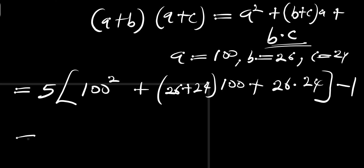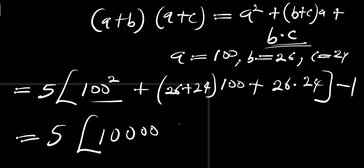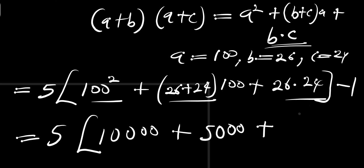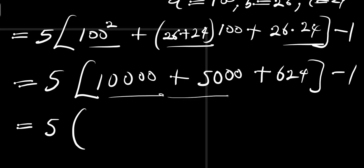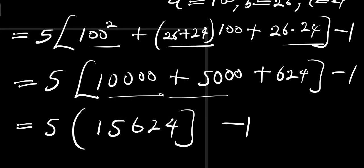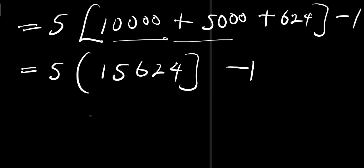Expanding: 100 squared is 10,000; 26 plus 24 is 50, and 50 times 100 is 5,000; 26 times 24 is 624; and we have minus 1. Adding 10,000 and 5,000 gives 15,000, so inside the bracket we have 15,624 minus 1.